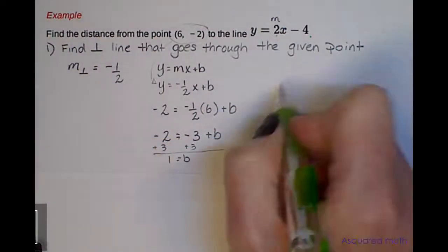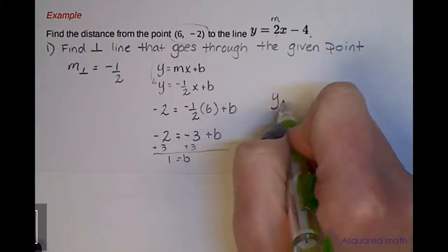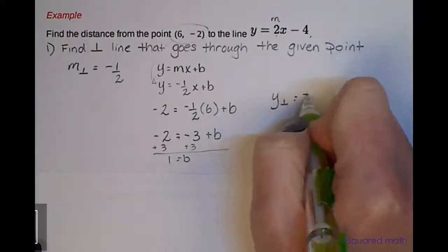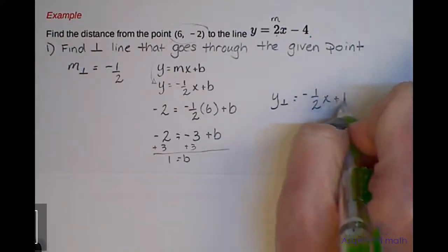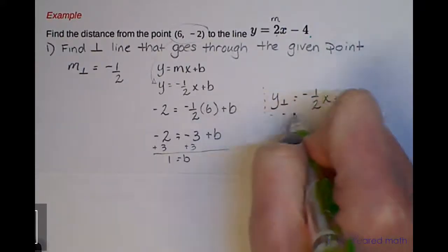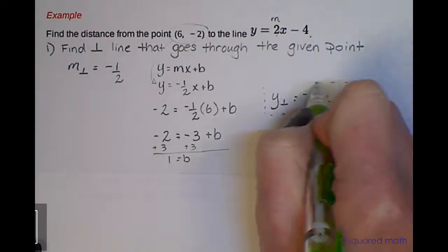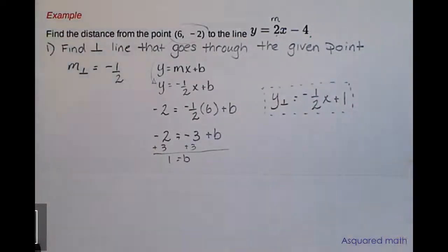So the equation for our perpendicular is y = -1/2 x + 1. I'm going to put a dashed box on that so I know where to come back to and get information from. That's the first part of this.